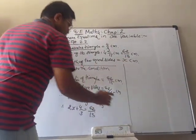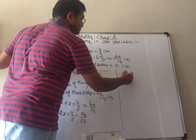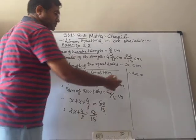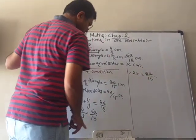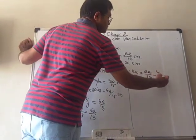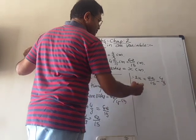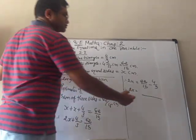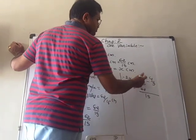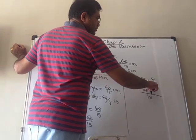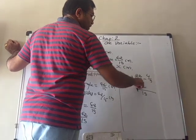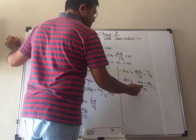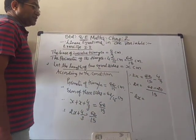So x plus x is 2x, therefore 2x plus 4/3 equals 62/15. We transpose 4/3 to the other side: 2x equals 62/15 minus 4/3. Taking LCM of 15 and 3, which is 15: 62/15 minus 20/15. So 2x equals 62 minus 20.